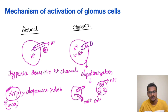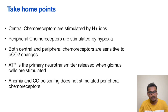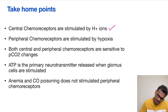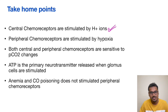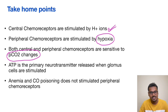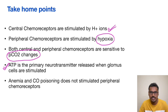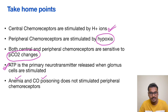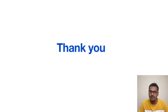The take-home points: central chemoreceptors are stimulated by H+ ions, whereas peripheral chemoreceptors are stimulated by hypoxia. What is common is that both are sensitive to changes in PCO2. The major neurotransmitter released by glomus cells is ATP. Two conditions that cannot stimulate peripheral receptors — because dissolved oxygen is normal in them — are anemia and carbon monoxide poisoning. In the next video, we'll see some updates on the regulation of respiration.